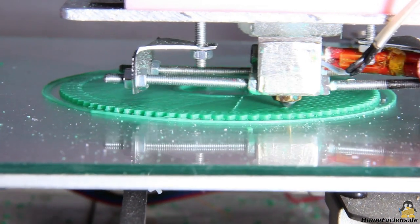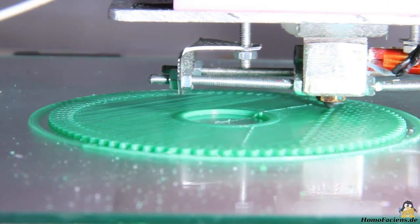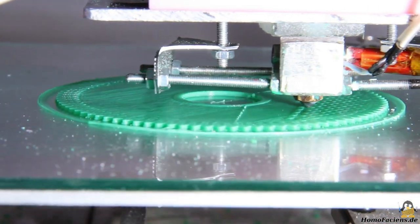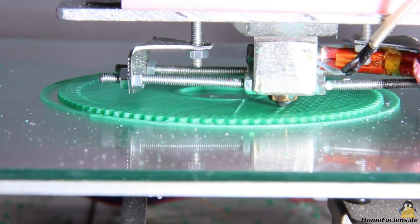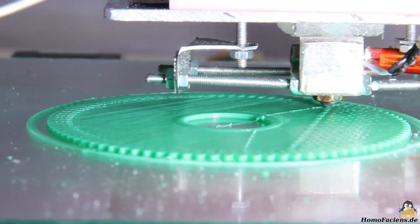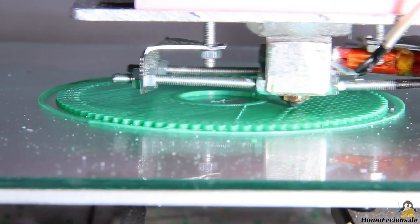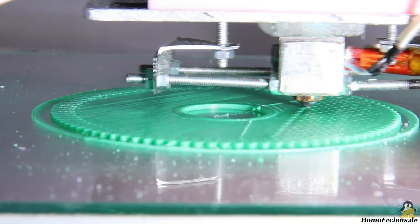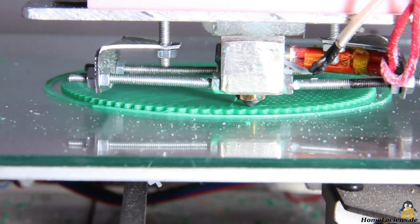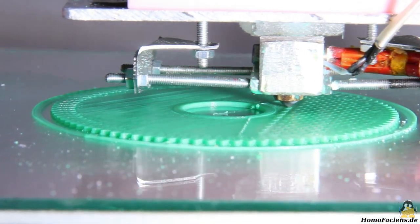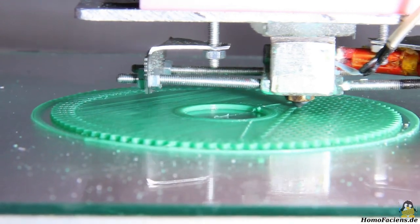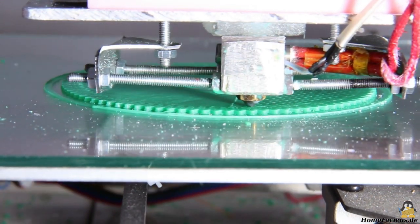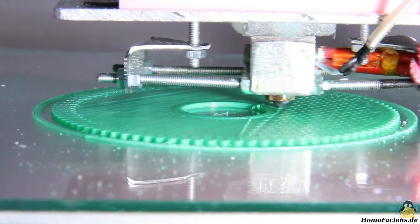The layer height of 0.7mm and the extrusion width of 0.7mm are also standard. Printing is done with PLA obtained from shredded failed prints. The temperature of the hot end is set to 181 degrees Celsius, that of the print bed to 60 degrees Celsius. The main gear has a diameter of 90mm and is therefore the largest component that I have printed so far.